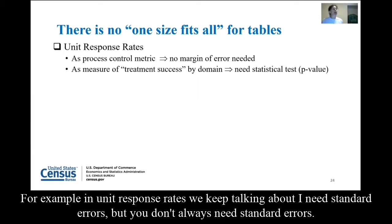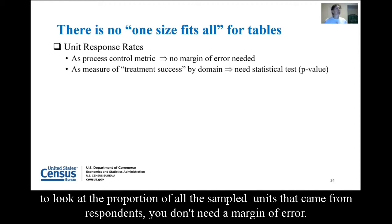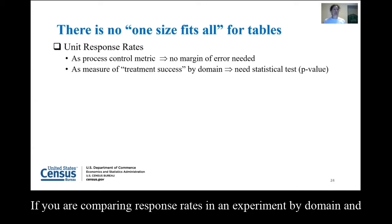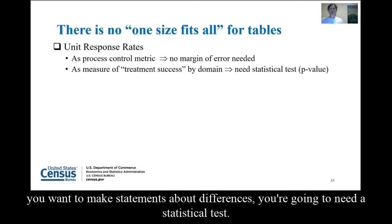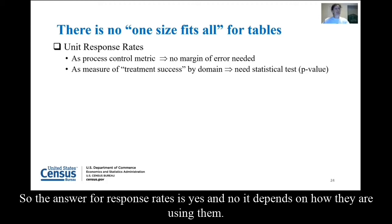There is no one-size-fits-all for tables. This is where the art and the science come in. For example, unit response rates — I keep talking about how you need standard errors, but you don't always need them. If you're looking at this as a process control metric, tracking the proportion of sample units that came from respondents period by period, you don't need a margin of error — this is just a performance metric. On the other hand, if you are comparing response rates in an experiment by domain and want to make statements about differences, you're going to need a statistical test, making it a contingency table requiring some kind of chi-square test for independence.